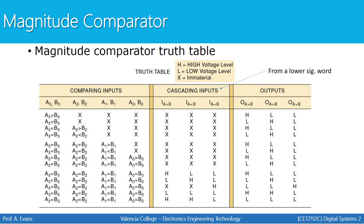Here is the magnitude comparator truth table showing how inputs would be compared. If the third bit of number A is bigger than the third bit of number B, it doesn't matter what comes next — we know A is greater than B. Think about comparing 8 (1000) to 7 (0111): the first bit automatically tells you which number is bigger. But if the first bit is equal, we compare based on the second bit.